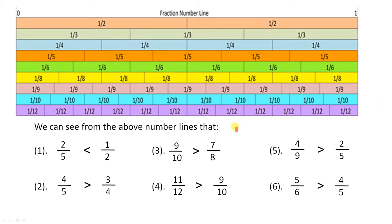We can see from the above number lines that — the number line just works on the interval from 0 to 1, and we've got six different comparisons we're doing here. Let's look at the first one: 2 over 5 is less than a half. Now let's look at where 2 over 5 is: there's 1 over 5, 2 over 5. You can see that 2 over 5 finishes there, but a half finishes here. So 2 over 5 is less than a half.